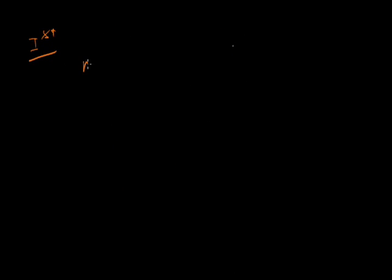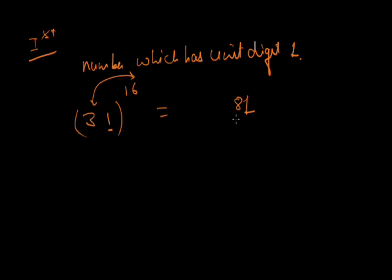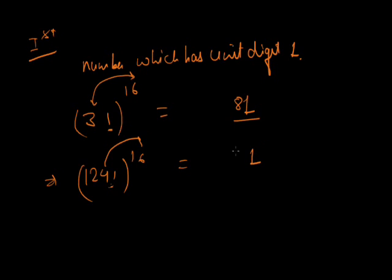The first concept applies to numbers which have unit digit 1. For example, 31 raised to power 16 — the unit digit is obviously 1. The tens digit is found by multiplying 3 with 6, giving 18, so the last two digits are 81. Similarly, 1241 raised to power 16: unit digit is 1, and the second digit is 4. Multiply 4 by 6 to get 24, so the last two digits are 41.